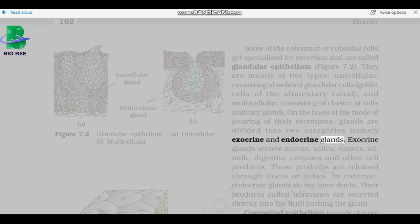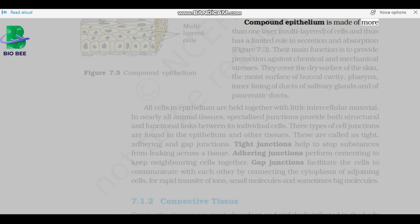Exocrine glands secrete mucus, saliva, ear wax, oil, milk, digestive enzymes, and other cell products. These products are released through ducts or tubes. In contrast, endocrine glands do not have ducts. Their products called hormones are secreted directly into the fluid bathing the gland. Compound epithelium is made of more than one layer of cells and thus has a limited role in secretion and absorption. Their main function is to provide protection against chemical and mechanical stresses.